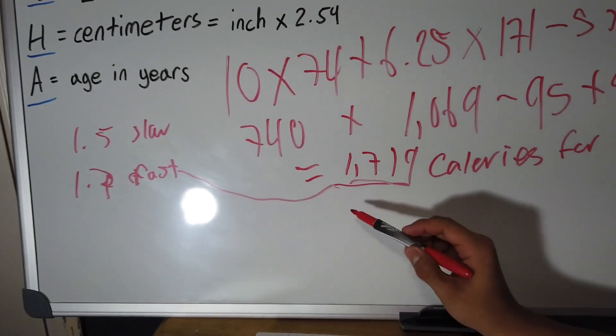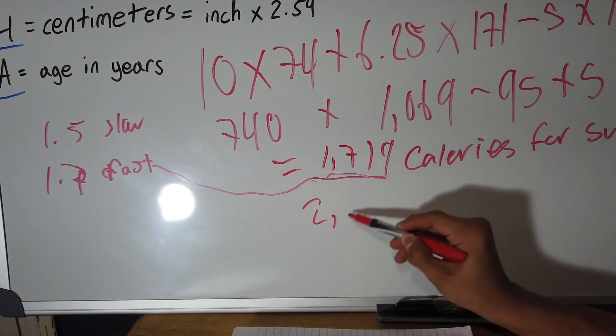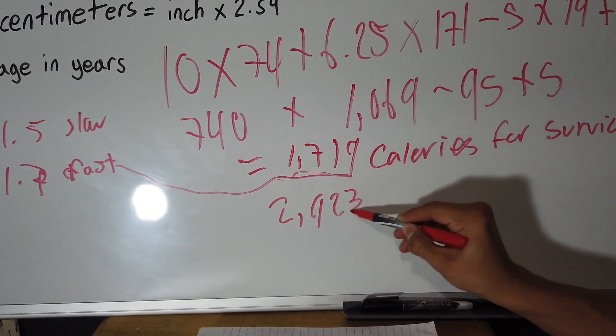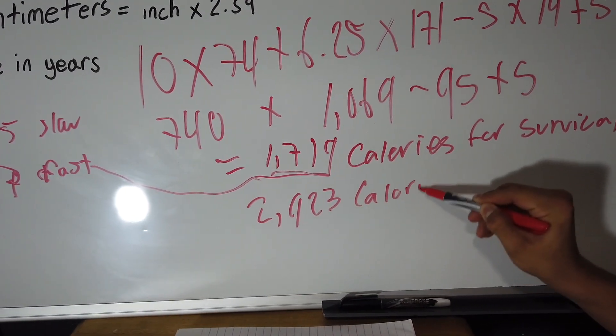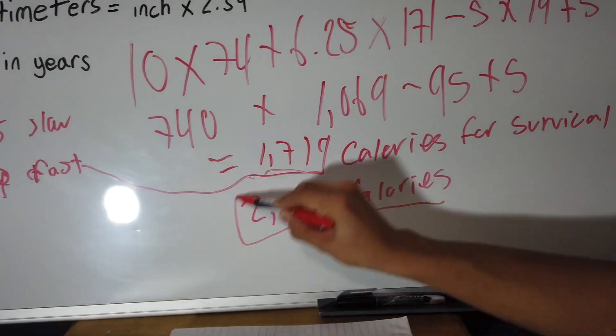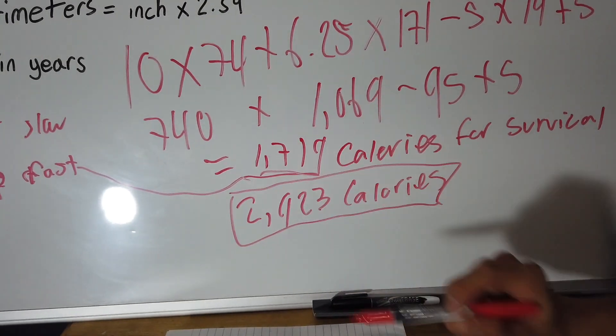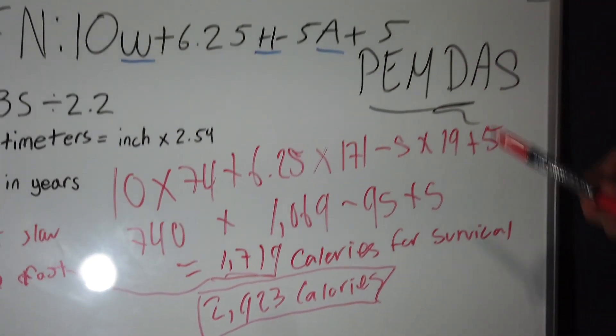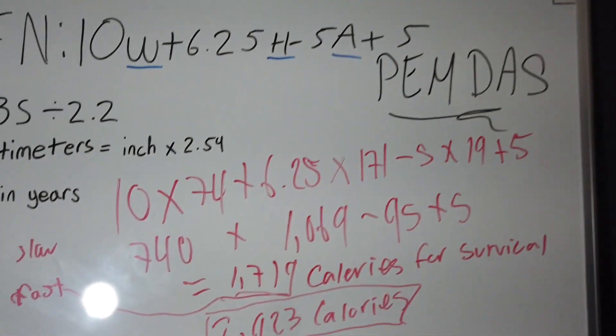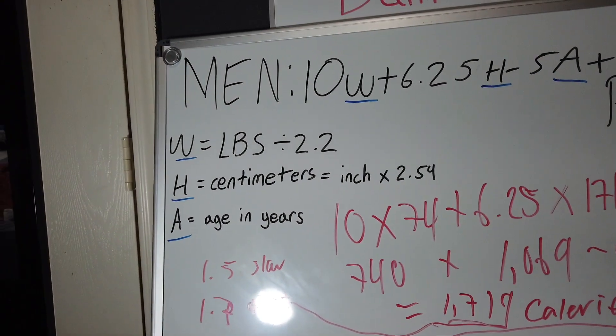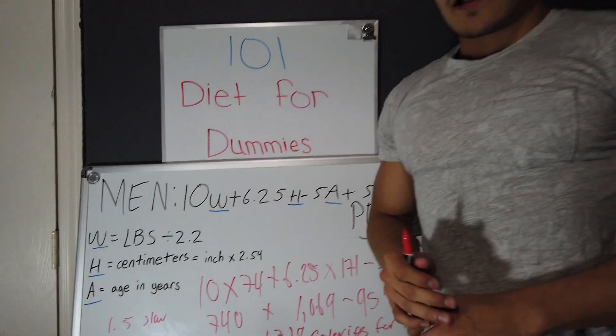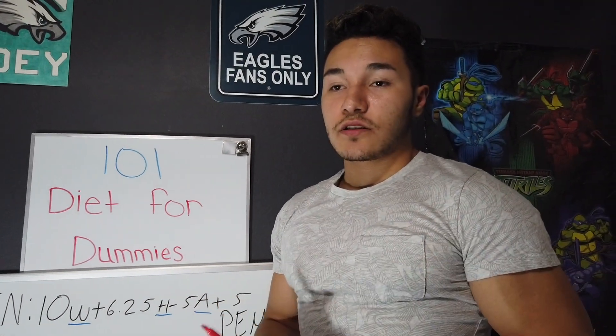So that would give me my maintenance caloric intake. So my maintenance would be 2,923 calories. That is how you solve the equation to figure out your maintenance calories. So like I said, basically your maintenance calories is the amount of calories your body needs just to stay the same weight.